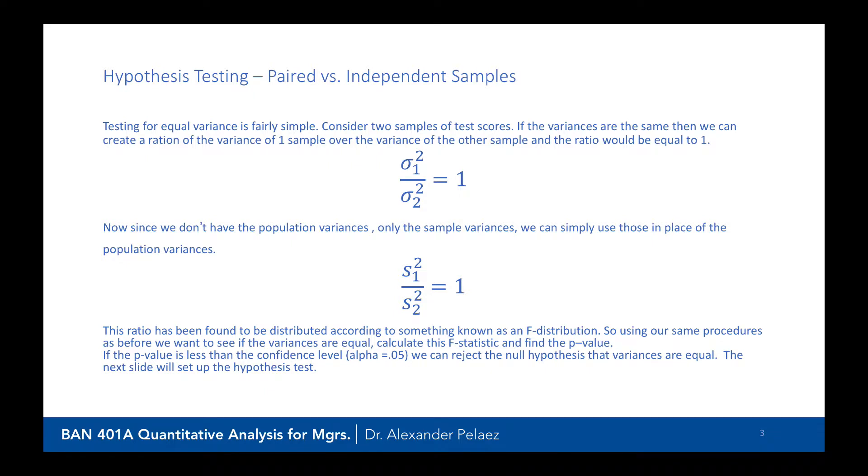So the question is how do we do that? Well, it should be fairly intuitive that if the variances were equal to each other or close, then we could actually take the variance of each one and put them as one as a numerator, the other as a denominator. If they were very close or equal, you would get one.